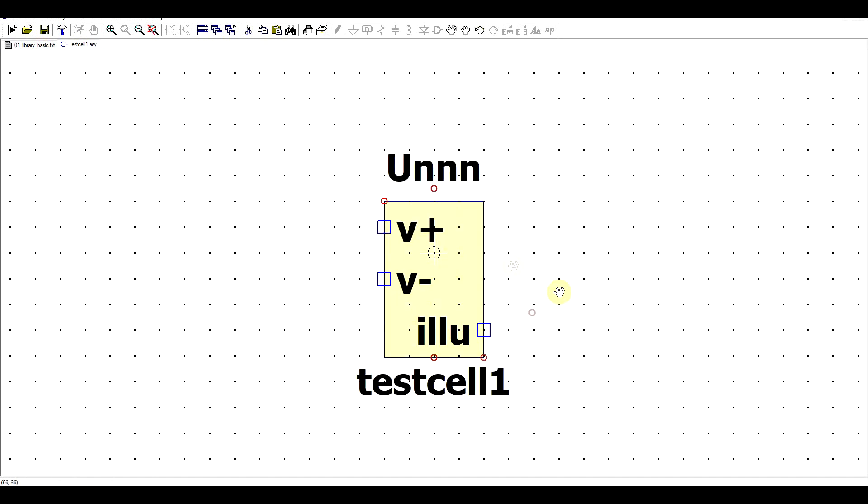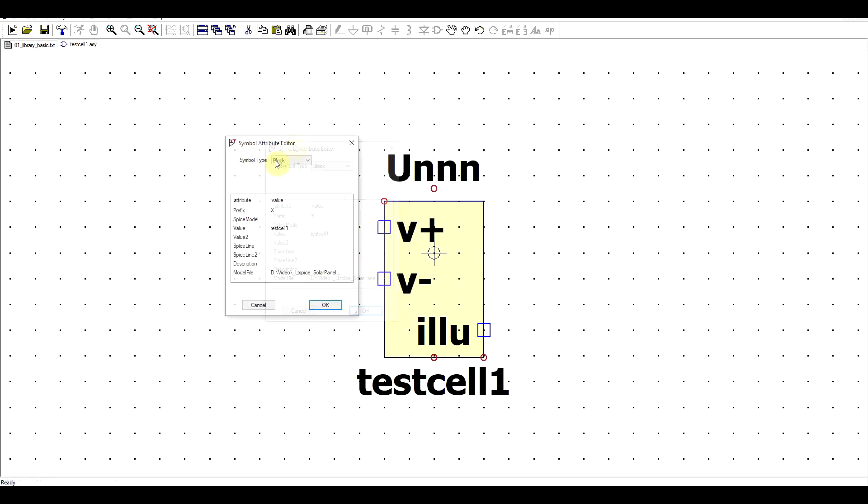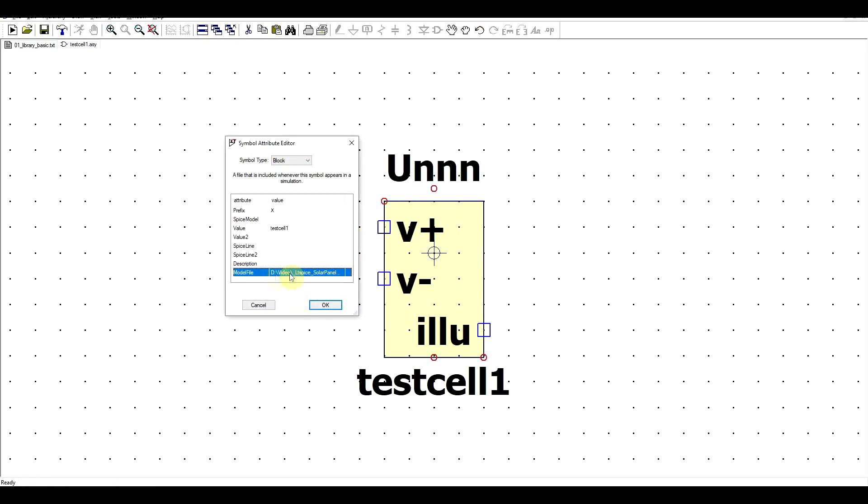And final thing under edit attributes window, I usually recommend to remove this model file link. This way you will be able to use any model that is linked to the simulation without having the link built into the symbol.